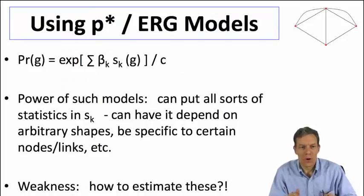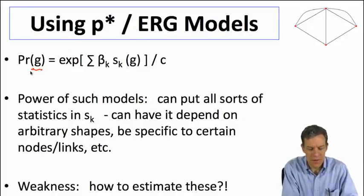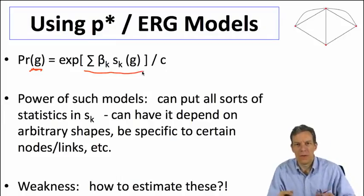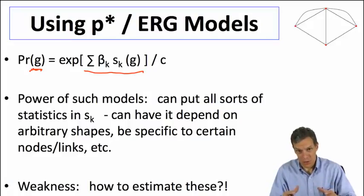If you recall, we have the exponential form where the probability of a given network depends on some set of statistics multiplied by some weights. The important idea is that this allows us to capture different shapes that we might think are important in dictating whether a random graph or network forms.